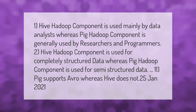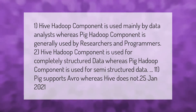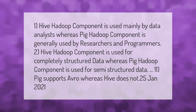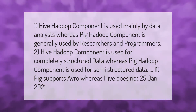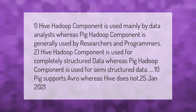Hive Hadoop component is used mainly by data analysts, whereas Pig Hadoop component is generally used by researchers and programmers. Hive Hadoop component is used for completely structured data, whereas Pig Hadoop component is used for semi-structured data.